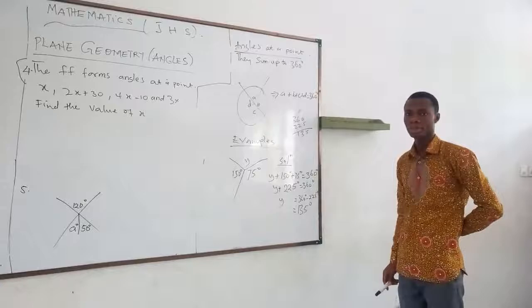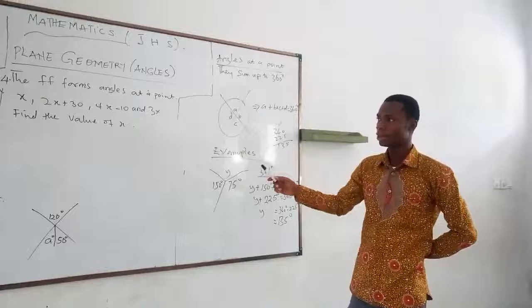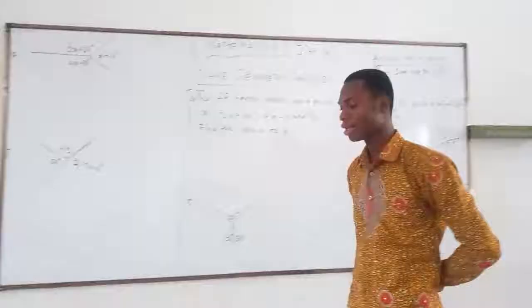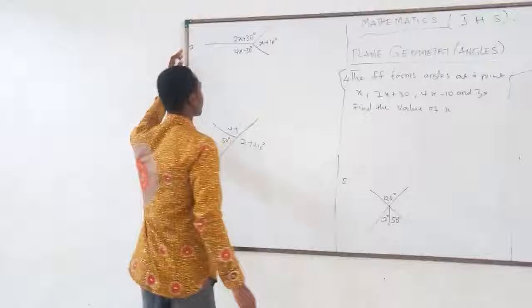That is the value of the unknown angle. Remember, the sum of angles at a point is 360 degrees. Let's continue with further examples. You have this diagram.